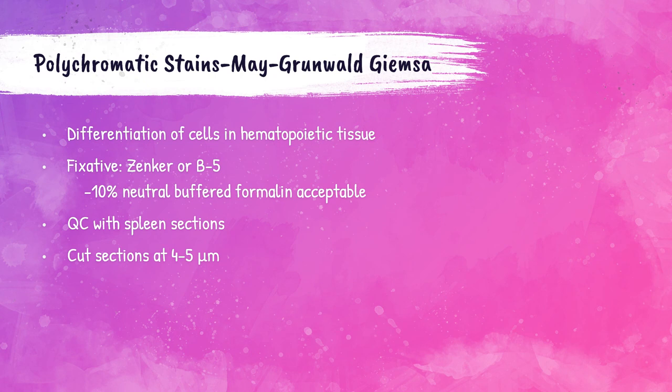The May-Grünwald Giemsa stain is used to differentiate cells in hematopoietic tissue — tissue that gives rise to blood cells. The preferred fixative is either Zenker's or B5 solution; 10% neutral buffered formalin is acceptable but not preferred. Tissue sections should be cut to 4–5 microns. The quality control slide should be a spleen section, as the spleen is a secondary hematopoietic tissue.